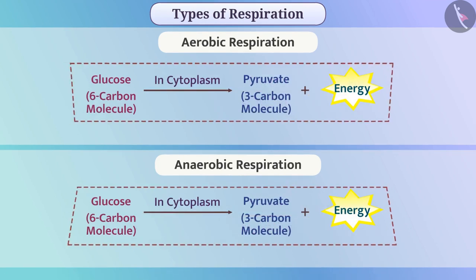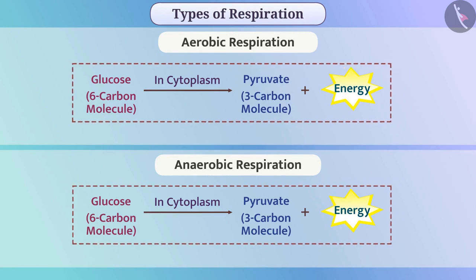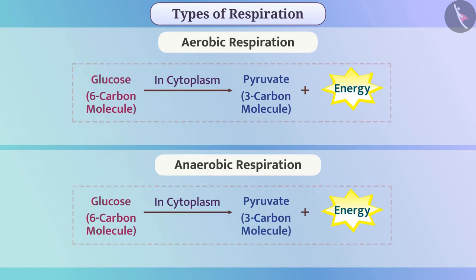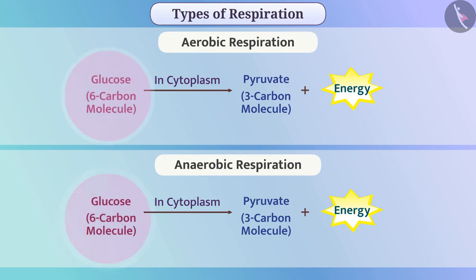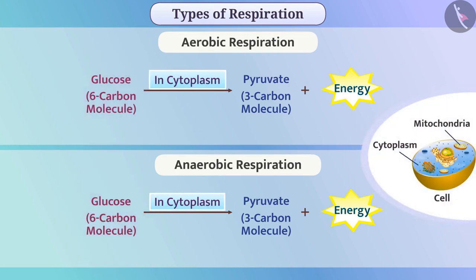The first step of both these processes is the same. In this process, the 6-carbon molecule glucose present in the cytoplasm of the cell is broken down into the 3-carbon molecule pyruvate, and energy is generated.